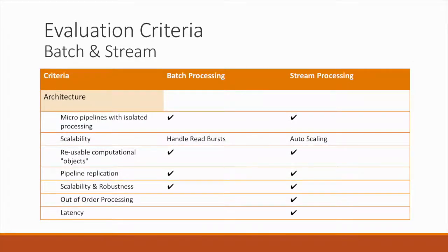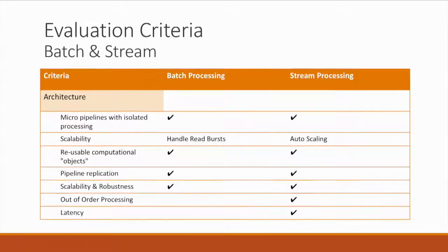Taking a step back — let's say you want to start with a brand new pipeline, how do you get started? You need to start with evaluation criteria. There are certain things common across different needs and certain things that need to be handled differently. We try to put them in different categories, starting with the architecture side: pipelines, where there will be a need for micro-pipelines and isolated processing, reporting needs, and different processing workloads.